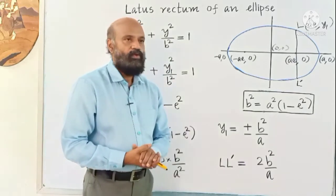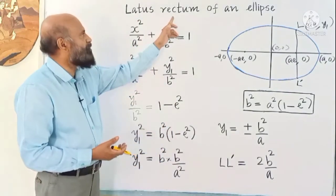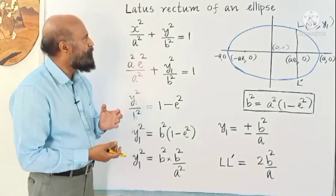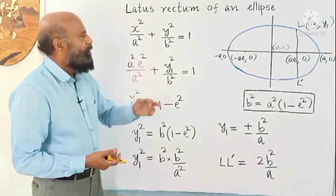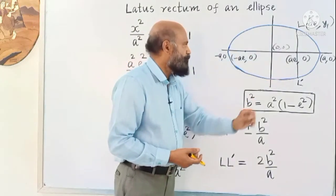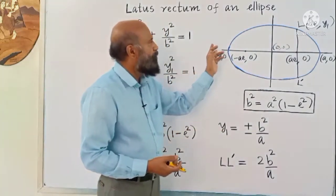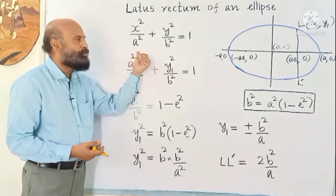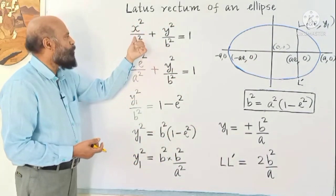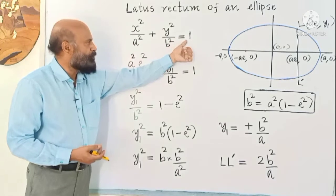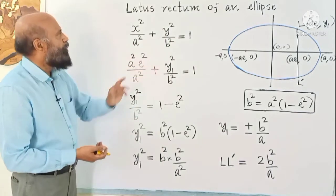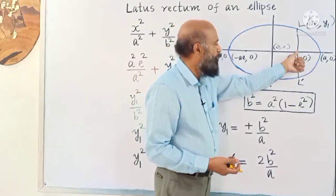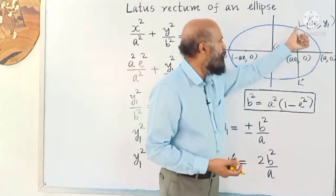Let us see what is the latus rectum of an ellipse and then find the length of the latus rectum. The equation of the ellipse whose centre is at the origin is x² / a² + y² / b² = 1. The latus rectum is the chord passing through the focus and perpendicular to the major axis.